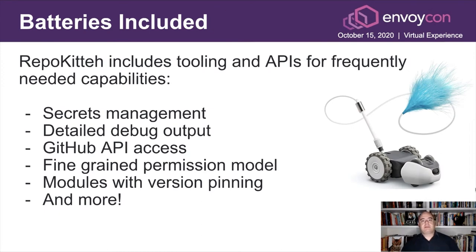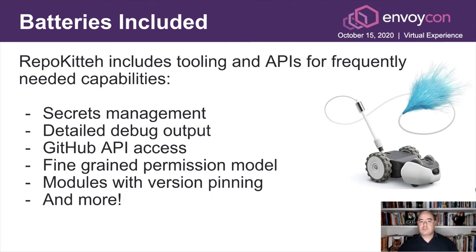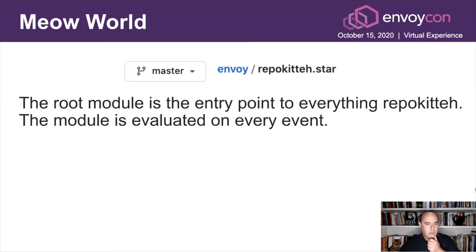There's a lot of stuff included in RepoKitten that lets us focus on what we actually need to write and not attend to various other services. For example, RepoKitten includes tooling and APIs for secret management, debug outputs using tracing, GitHub API access, a fine-grained permission model which GitHub does not give you, modules with version pinning, and much more. In the root of the repo, there is a file called repokitten.star. This file is the root module, and whenever there is some kind of event that needs to be acted upon, RepoKitten knows how to open this file and evaluate it.